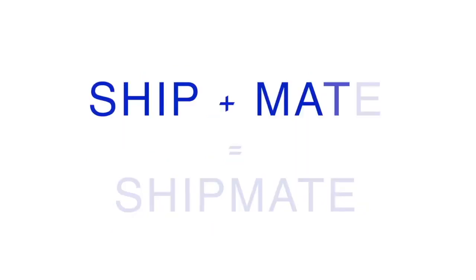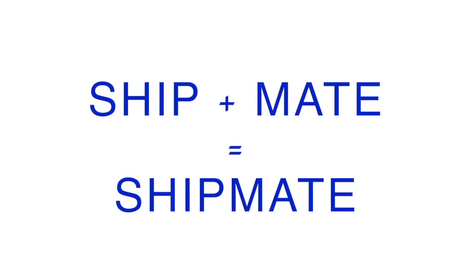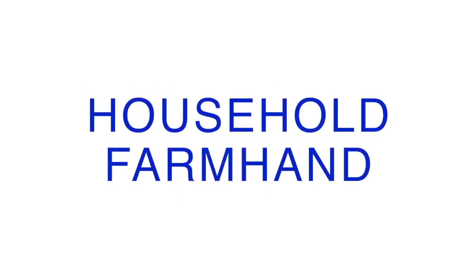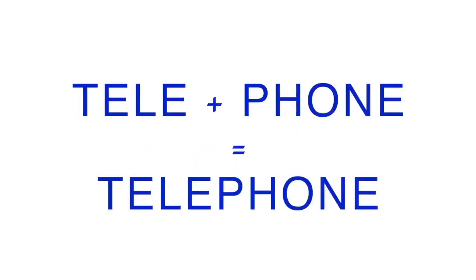Now we'll learn how Greek words are built and then build some Greek words of our own. Many English words of Greek origin are simple compound words made by putting together two basic root forms — built just like simple compound words in English, like ship and mate making shipmate, or house and hold making household. In a similar manner, two Greek words were put together to make telephone: the Greek root tele and the Greek root phone.